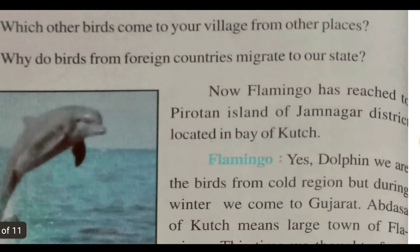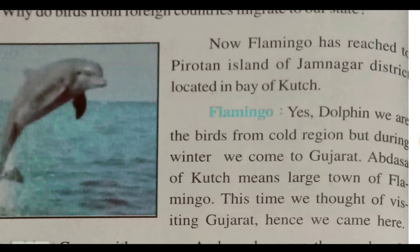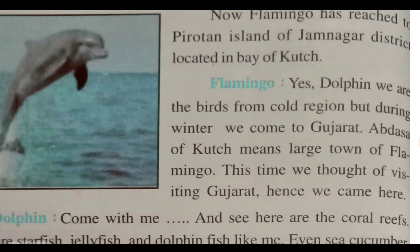Flamingo has reached Pirotan Island of the Jamnagar district, located in the Gulf of Kutch. Here they meet Dolphin. Dolphin says, we are birds from cold regions, but during winter we come to Gujarat. We have come from foreign countries because of the cold season.